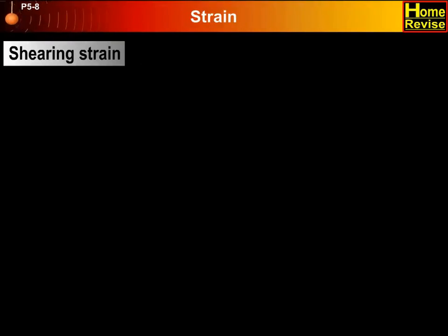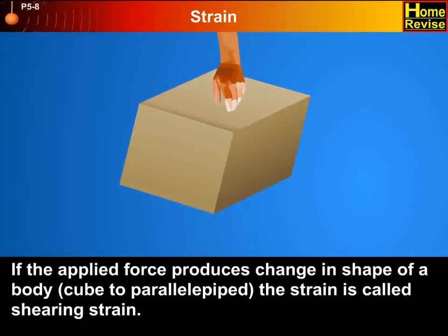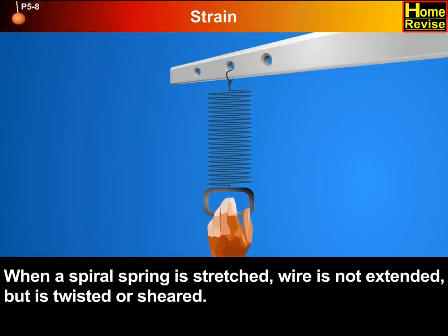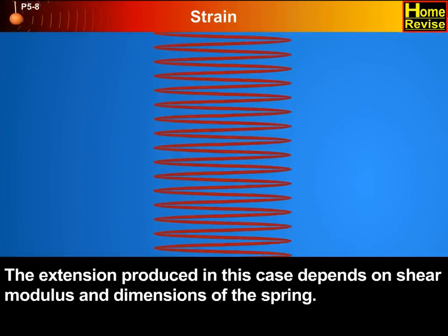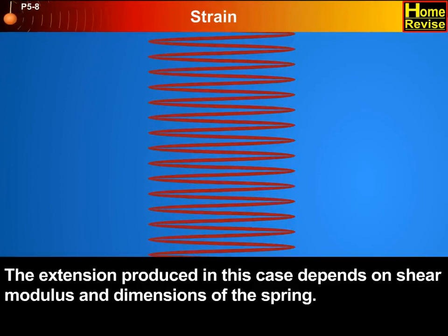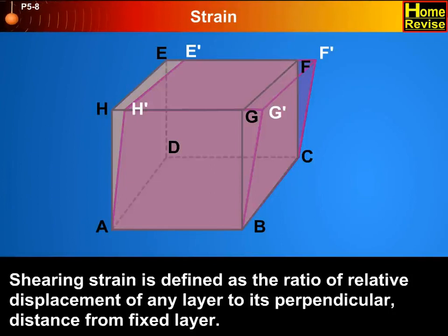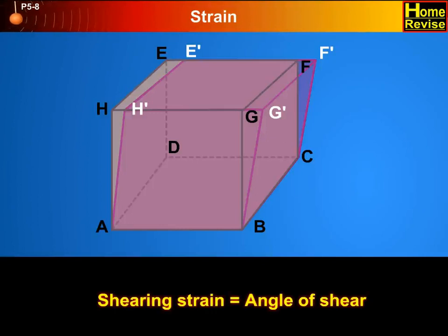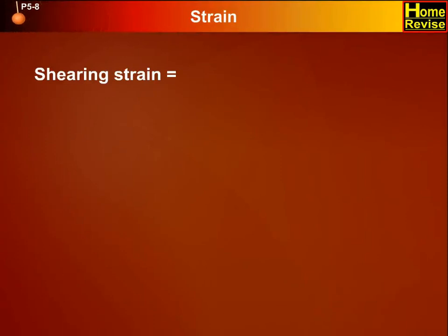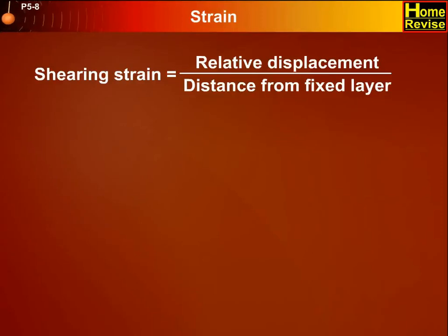Shearing strain: if the applied force produces a change in shape of a body — for example, from a cube to a parallelepiped — the strain is called shearing strain. When a spiral spring is stretched, the wire is not extended but is twisted or sheared. The extension produced depends on shear modulus and dimensions of the spring. Shearing strain is defined as the ratio of relative displacement of any layer to its perpendicular distance from the fixed layer. Shearing strain is equal to the angle of shear, which equals relative displacement upon distance from the fixed layer.